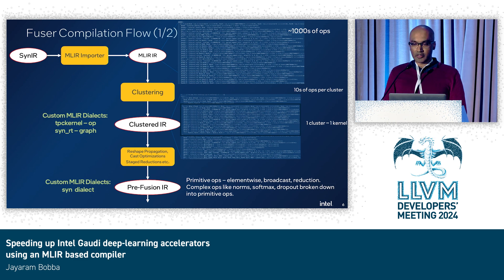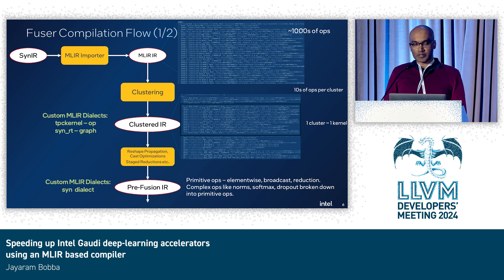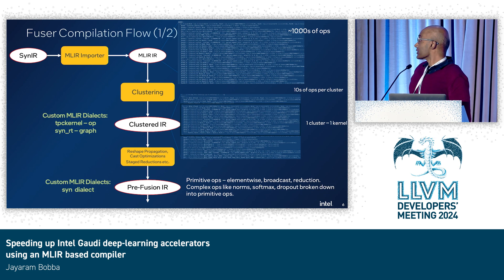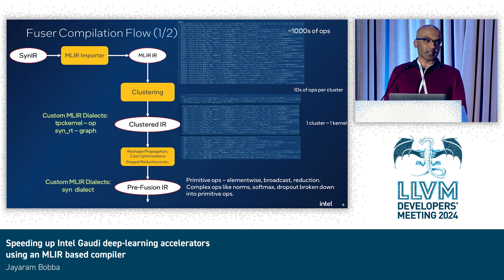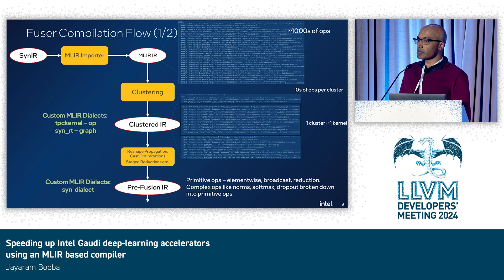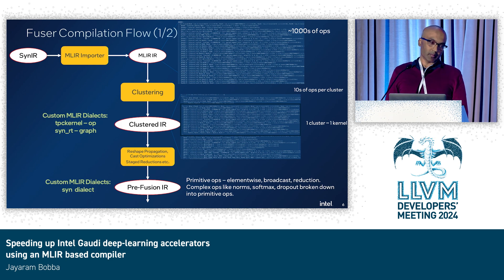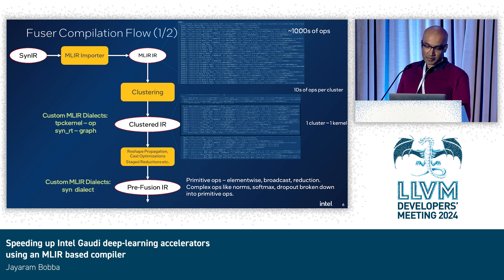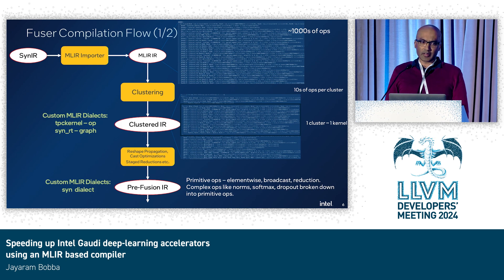Now I'll get a bit deeper into the fuser compilation flow. The graph compiler gives us an input IR which is not in MLIR format. So the first step we do is an importer that creates MLIR IR. Typically we have thousands of operations in this computation. This is represented using a custom dialect that we call the TPC kernel dialect, and it's designed mostly to interoperate with other components in the system, so if we don't handle something, it can fall back to a different performance library or another compiler. We then go through a series of clustering passes that group these ops into clusters. Each cluster will typically end up running as a single kernel, and there are roughly tens of ops in these clusters.